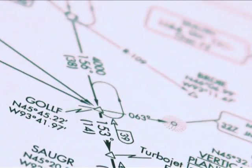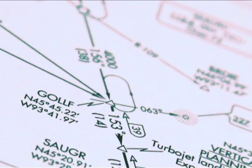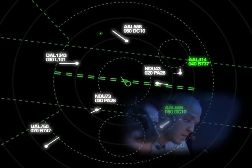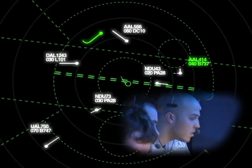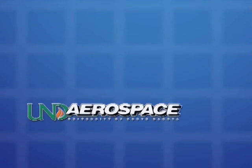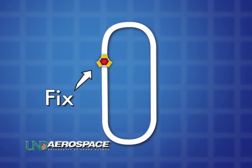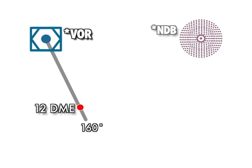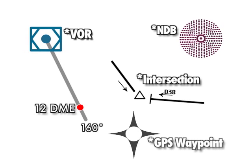A holding pattern can be published on either airway charts or terminal charts, or can be unpublished and specified by the air traffic controller. A typical pattern is defined by the fix on which the pattern is based. Simply put, a fix is a stationary point. It could be a VOR, radial DME, NDB intersection, GPS waypoint — anything that can define a navigable point in space.